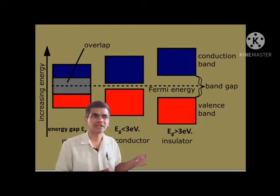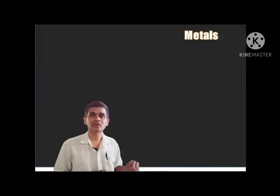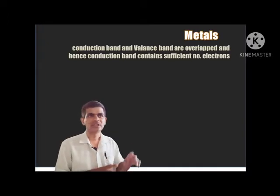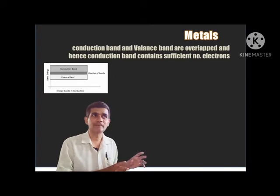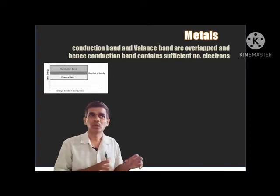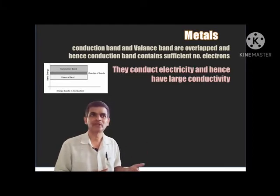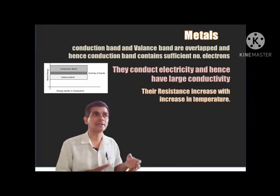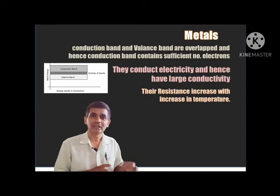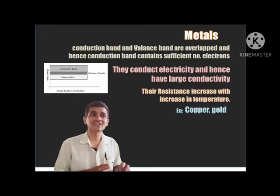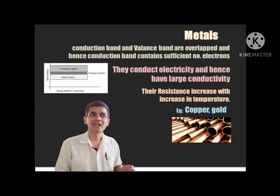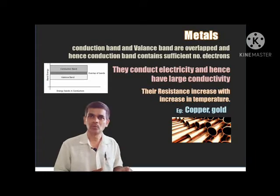From this picture, we can clearly understand the band structure of metals, semiconductors, and insulators. In case of metals, the energy band diagram shows that the conduction band and valence band are overlapped. Hence, the conduction band contains a sufficient number of free electrons. There will be sufficient electrons available for conductivity, and due to that reason they conduct electricity. But their resistance increases as temperature increases, or conductivity decreases as temperature increases. Examples: copper, gold, silver, etc.